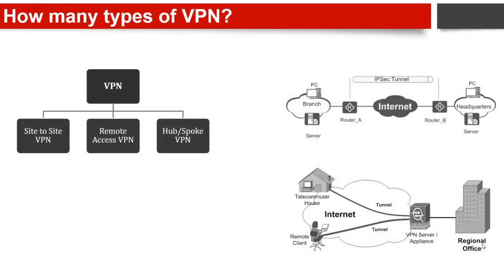How many types of VPN? There are three main types of VPN: Site-to-Site VPN, Remote Access VPN, and Hub and Spoke VPN.